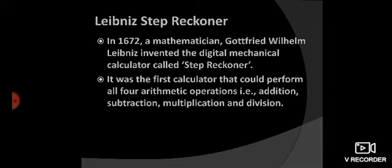And next we have Leibniz step reckoner. This is another machine. In 1672, mathematician Gottfried Wilhelm Leibniz invented a digital mechanical calculator that was called step reckoner. And this was the first calculator which could perform all four arithmetic calculations.